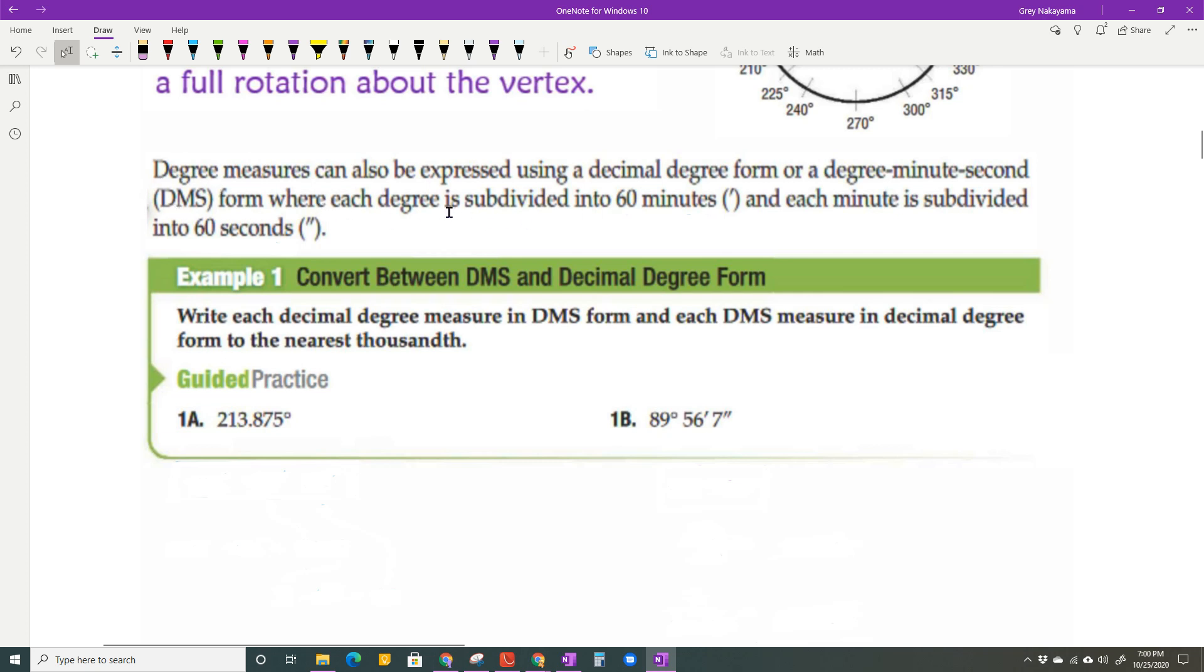Now each degree, when you do degrees, minutes, seconds, each degree is divided into 60 minutes, and each minute is divided into 60 seconds, kind of like hours, minutes, and seconds.